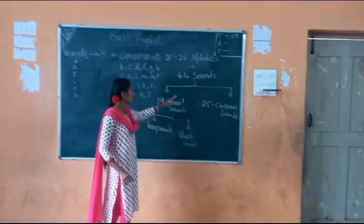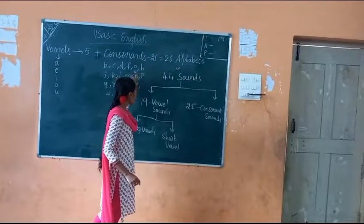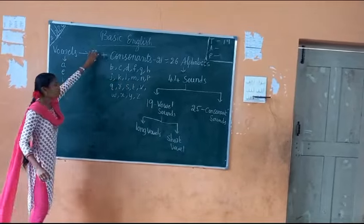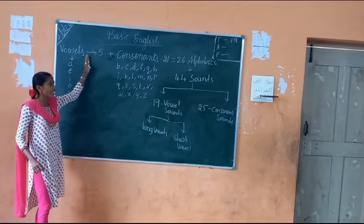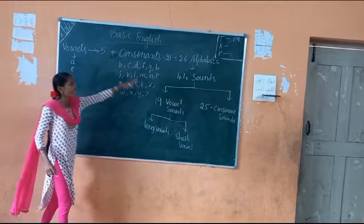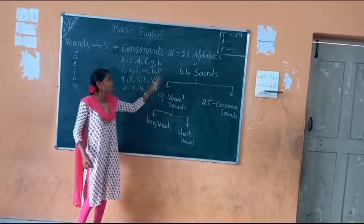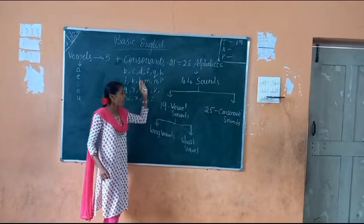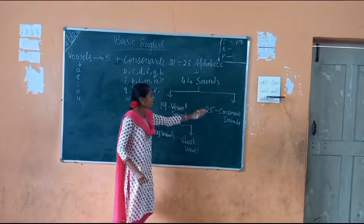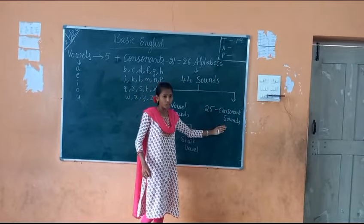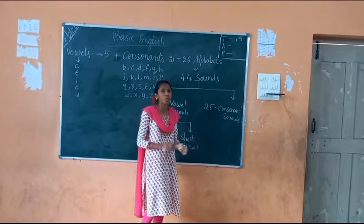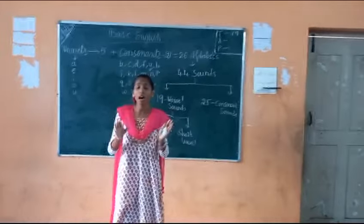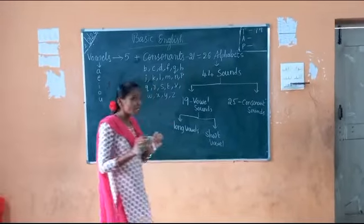So in these vowels, in these 5 vowels, only 5 vowels are there but they can sound as 19 vowel sounds. These 21 consonants give us 25 consonant sounds. Because only 26 letters are there and we are having 44 sounds.